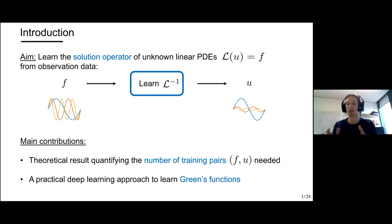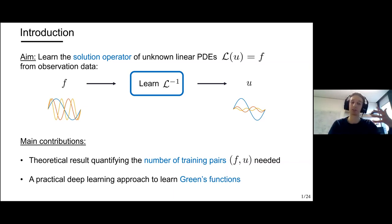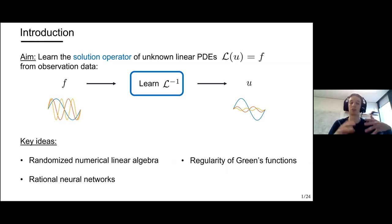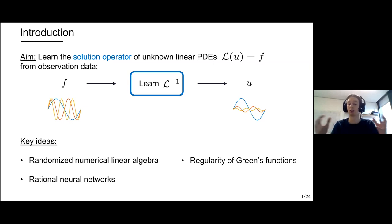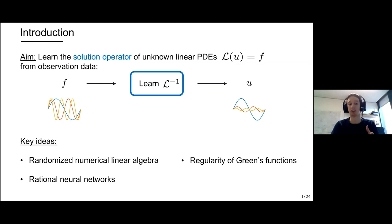The main contributions I'll describe are: first, a theoretical result that quantifies how many training pairs f and u you need to learn the solution operator; and second, a practical deep learning approach to learn Green's functions of linear PDEs. These contributions are based on three key ideas: randomized numerical linear algebra, regularity of Green's functions, and rational neural networks.